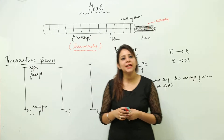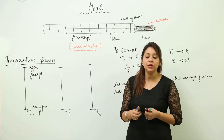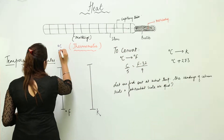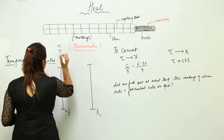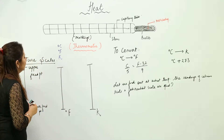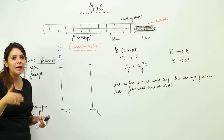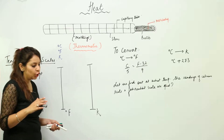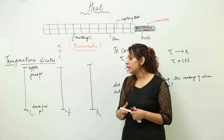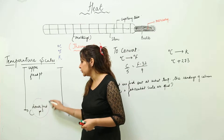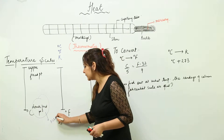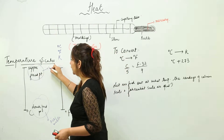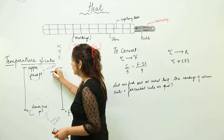There are different temperature scales used to measure temperature. The common scales are degree Celsius, degree Fahrenheit, and Kelvin. These scales are divided into equal parts, and each thermometer scale has an upper fixed point and a lower fixed point. The lower fixed point is the point at which ice melts, and the upper fixed point is the point at which water boils.